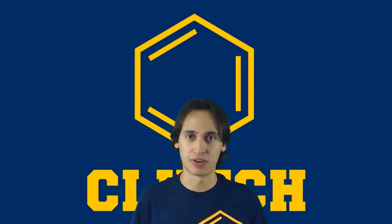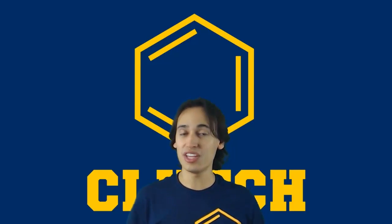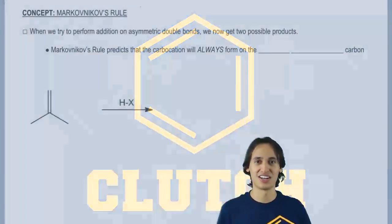In that case, how do we decide where the carbocation goes and where the H goes or wherever the electrophile goes? For this, we're going to have to use the prevailing rule of this whole section and that's called Markovnikov's rule. So let's go ahead and check it out.